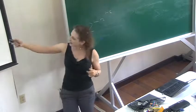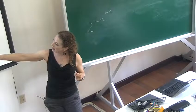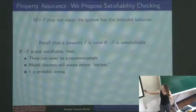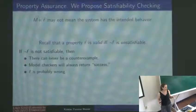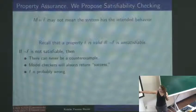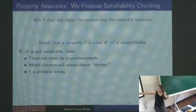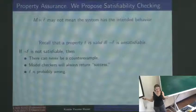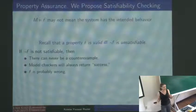More specifically: if your model checker returns true — that M models F — it doesn't necessarily mean the system behaves the way you expect. If F was accidentally valid and not-F is unsatisfiable, the model checker can never find a counterexample, but it will return success. That's probably not success the way you intended — it's probably because your specification is wrong.